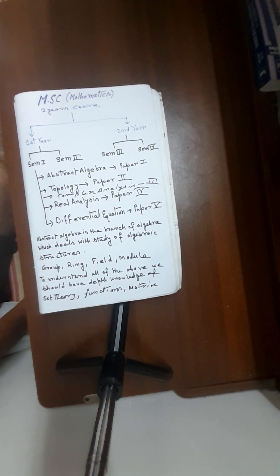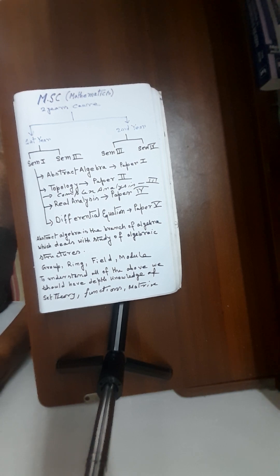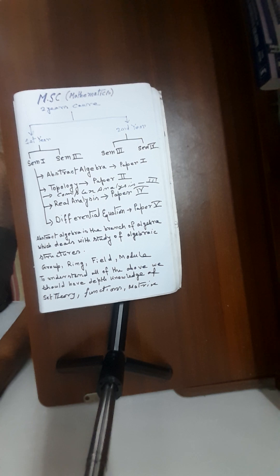Hello guys, welcome to my second video on books for MSc Mathematics. In our previous video we saw that MSc Mathematics is a two-year course with first year and second year, each year containing two semesters. We were discussing the first semester books — those were Abstract Algebra, Topology, Complex Analysis, Real Analysis, and Differential Equations.